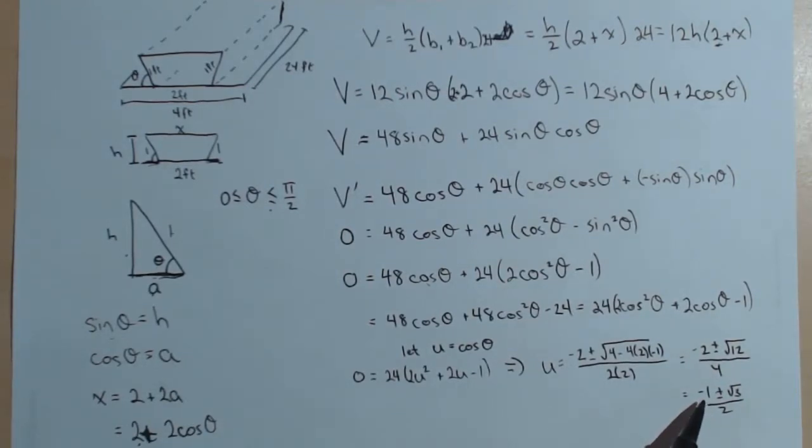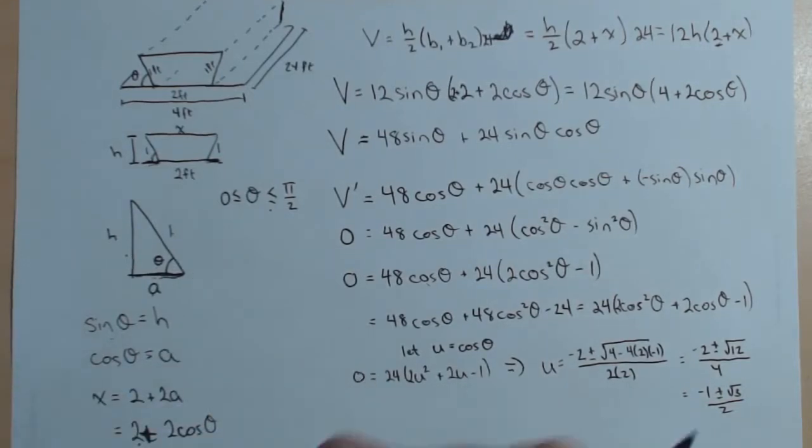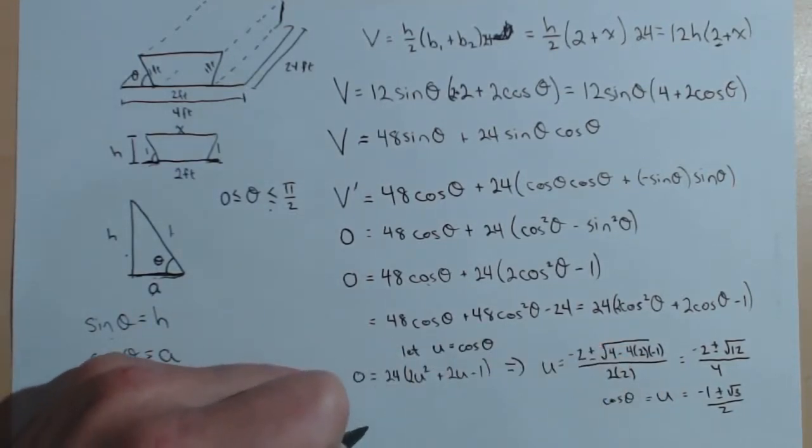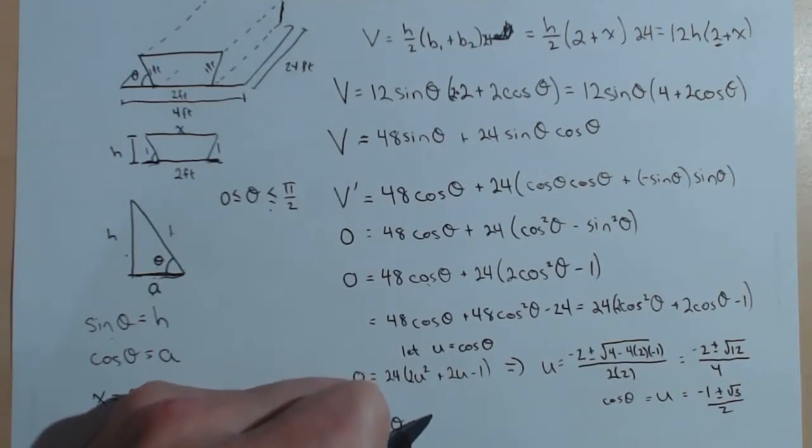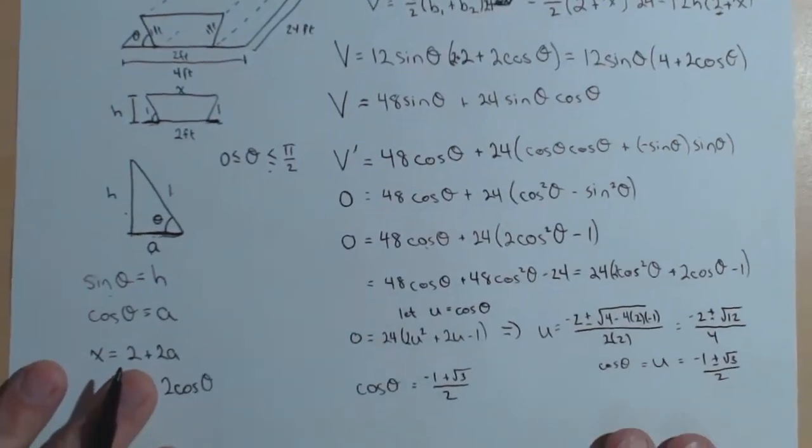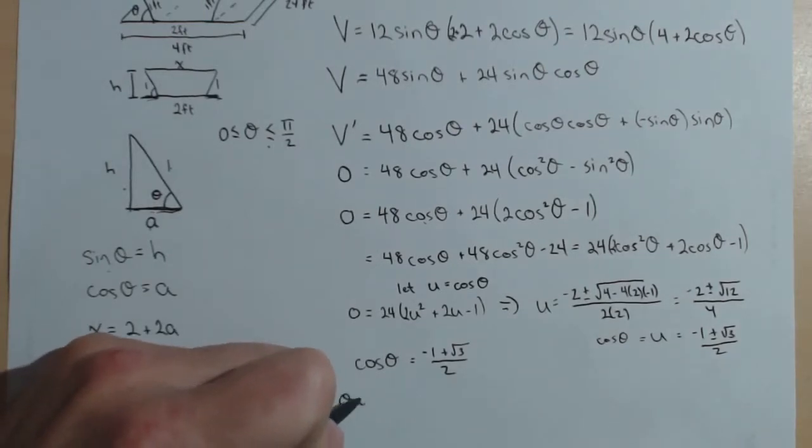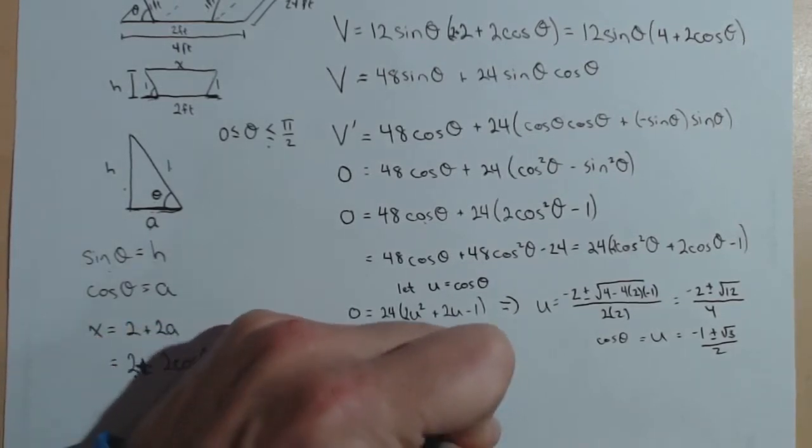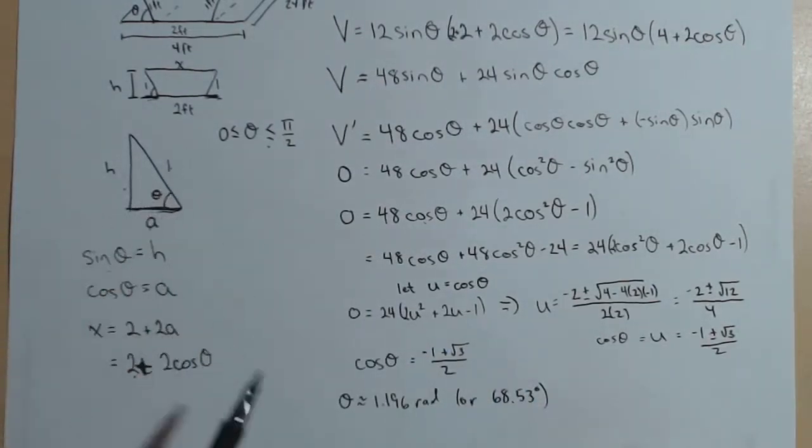One of these is positive and one of these is negative. We know we want to be in the first quadrant, and we're dealing with this is a value for cosine, because this is u, which is equal to cosine of theta. So we're only going to need to solve cosine of theta equal to the positive value, which is with the plus. So cosine of theta equals negative 1 plus square root of 3 over 2. Using an inverse trig function, solving this for theta, we get theta is approximately 1.196 radians, or 68.53 degrees. We're in between that 0 and 90, like we need it.